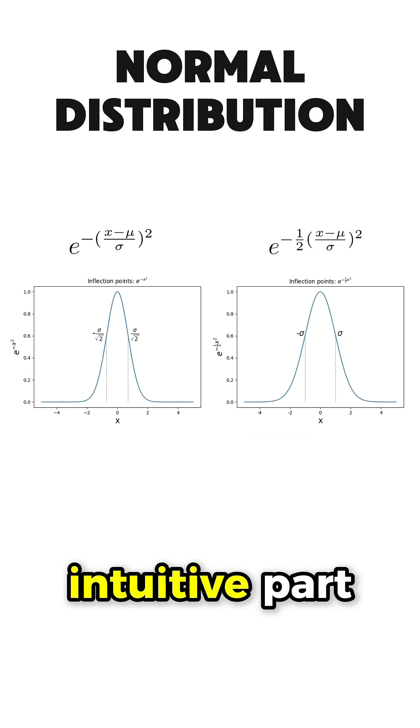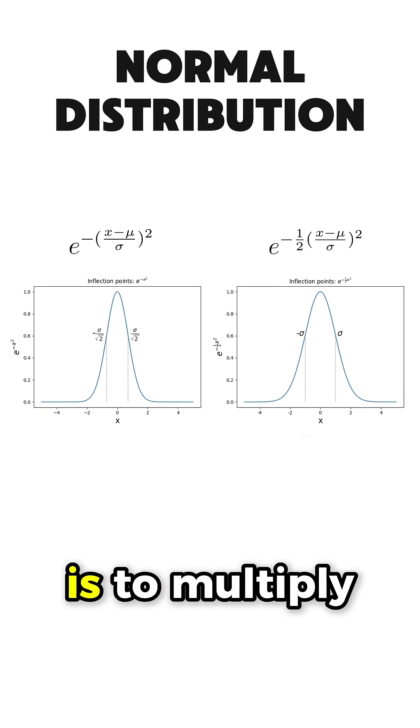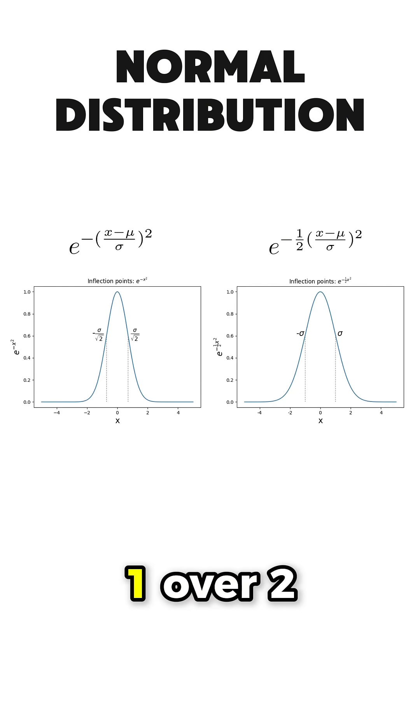Another not so intuitive part, at least not for me, is to multiply the exponent with 1 over 2.